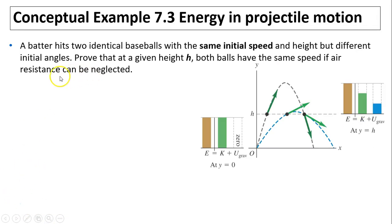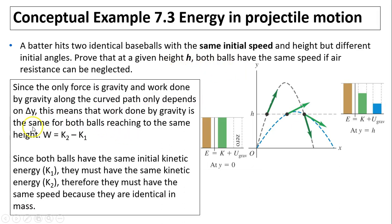Example: a batter hits two identical baseballs with the same initial speed and height but different initial angles. Prove that at a given height, both balls have the same speed if air resistance is ignored. Since the only force is gravity, and work done by gravity along any curved path depends only on height, the work done by gravity is the same for both balls reaching the same height. Work equals K2 minus K1; since both have the same initial K1, their K2 must be the same, and therefore their speeds must be the same since they have the same mass.